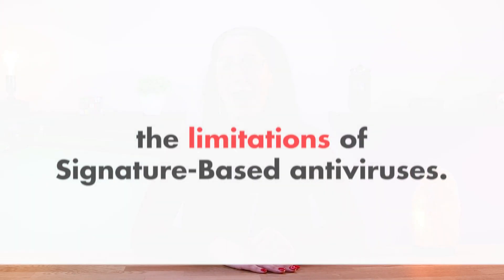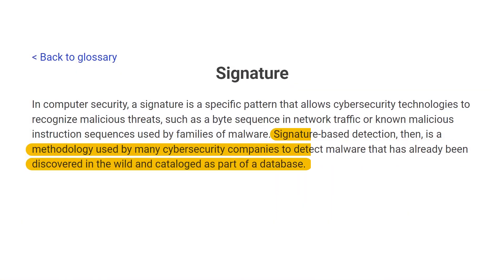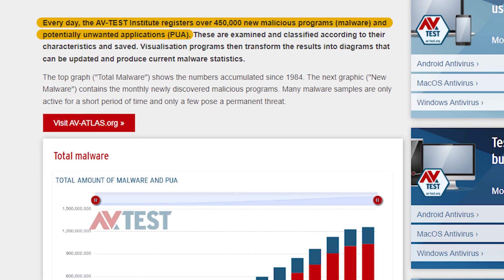Let's start by talking about the limitations of signature-based antiviruses. Traditional antiviruses mainly rely on signature-based detection to identify and eliminate known malware. These signatures are basically like fingerprints that antivirus programs use to recognize and block malicious files. While effective against known threats, they are not capable of identifying new malware that is not in their database. Considering that around 450,000 new pieces of malware are registered every day, according to evtest.com, signature-based antiviruses cannot keep up with these cyber threats.